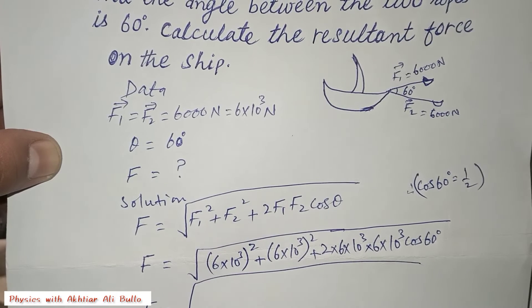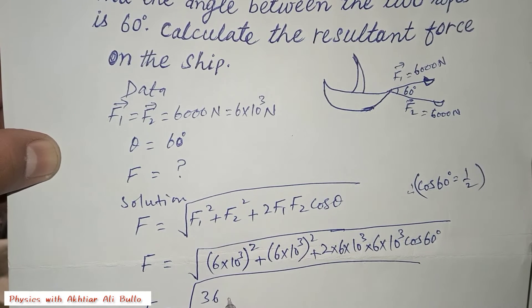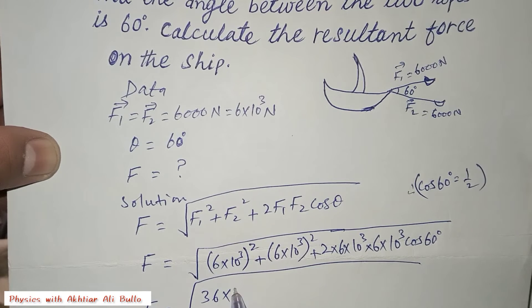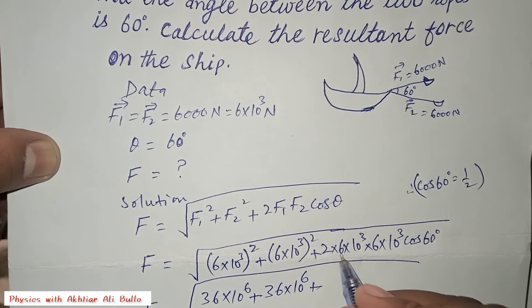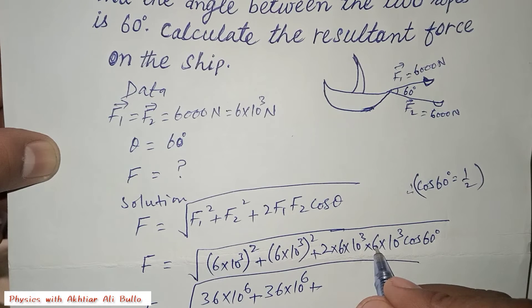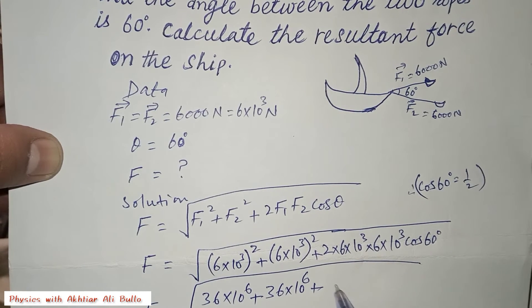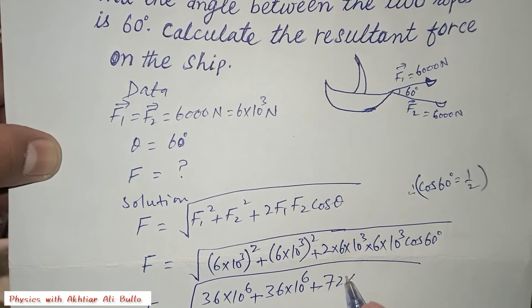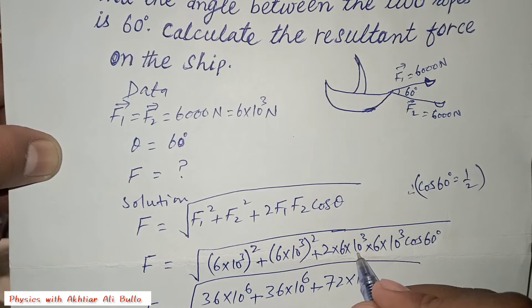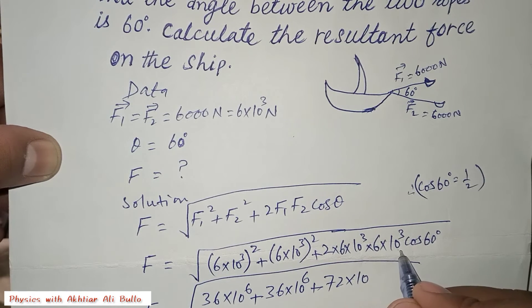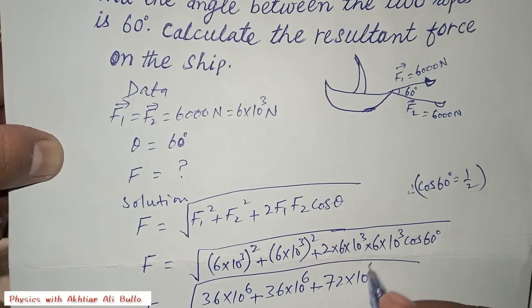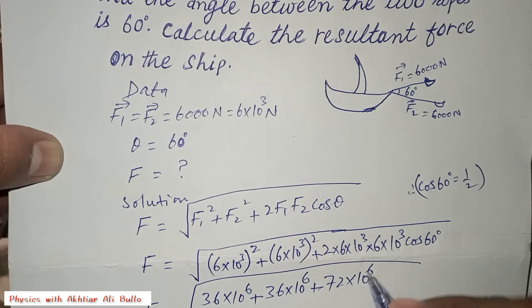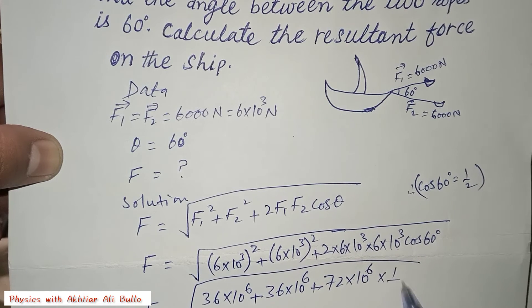Squaring: 6² is 36 and (10³)² is 10⁶, so each squared term gives 36 × 10⁶. For the cross term: 2 × 6 × 6 = 72, and since bases are the same we add the powers: 10³ × 10³ = 10⁶. Multiplying by cos(60°) = 1/2 gives 72/2 = 36.